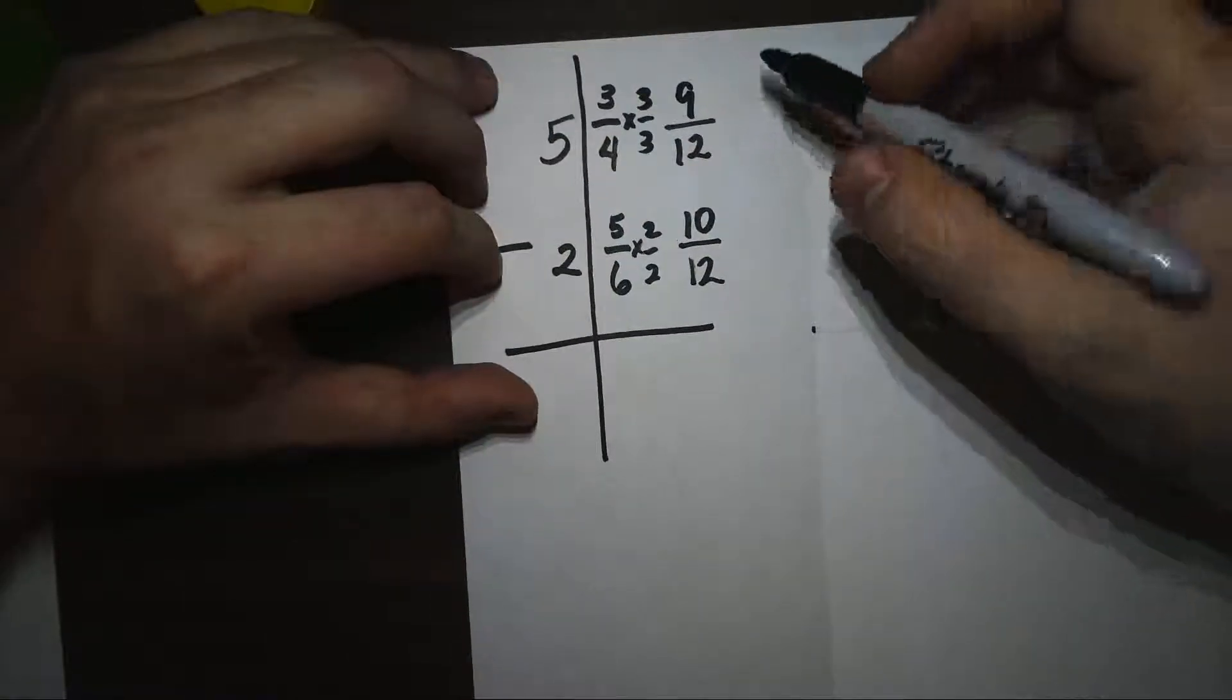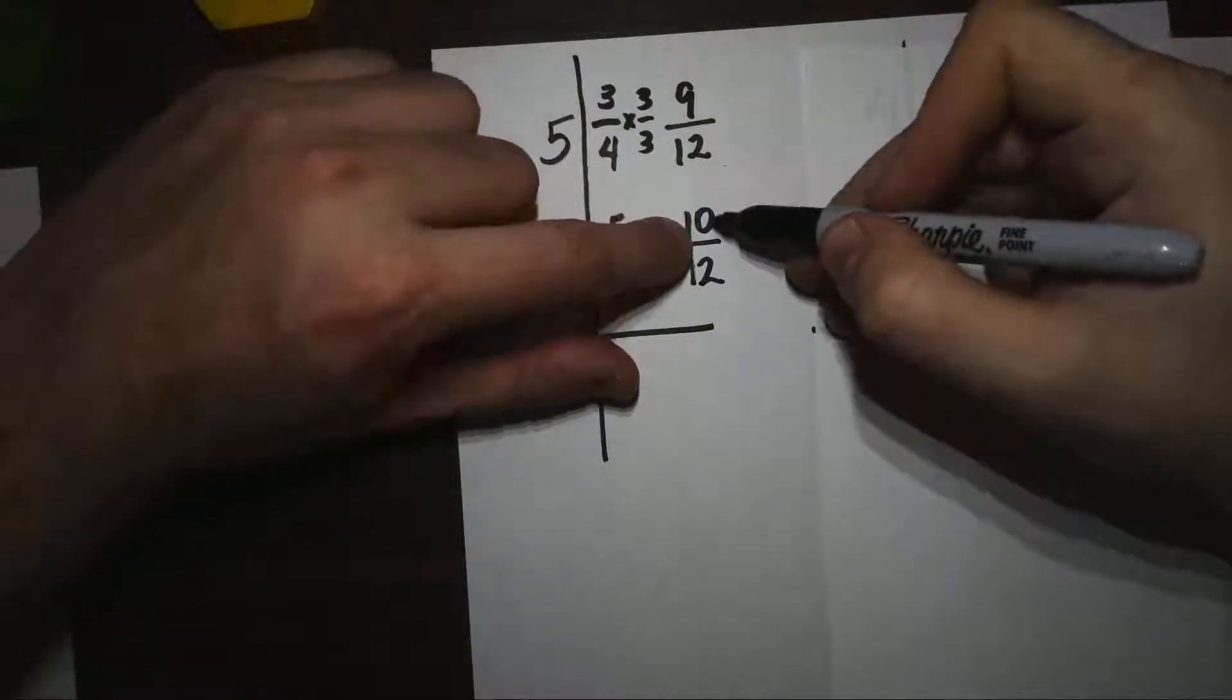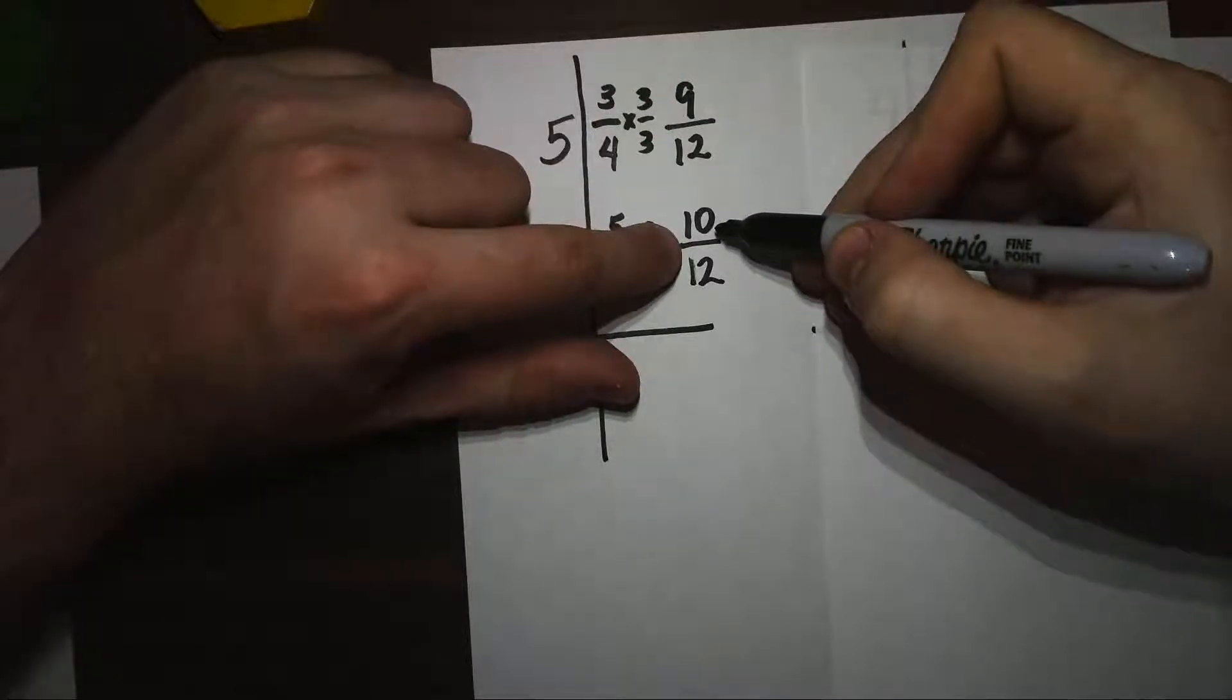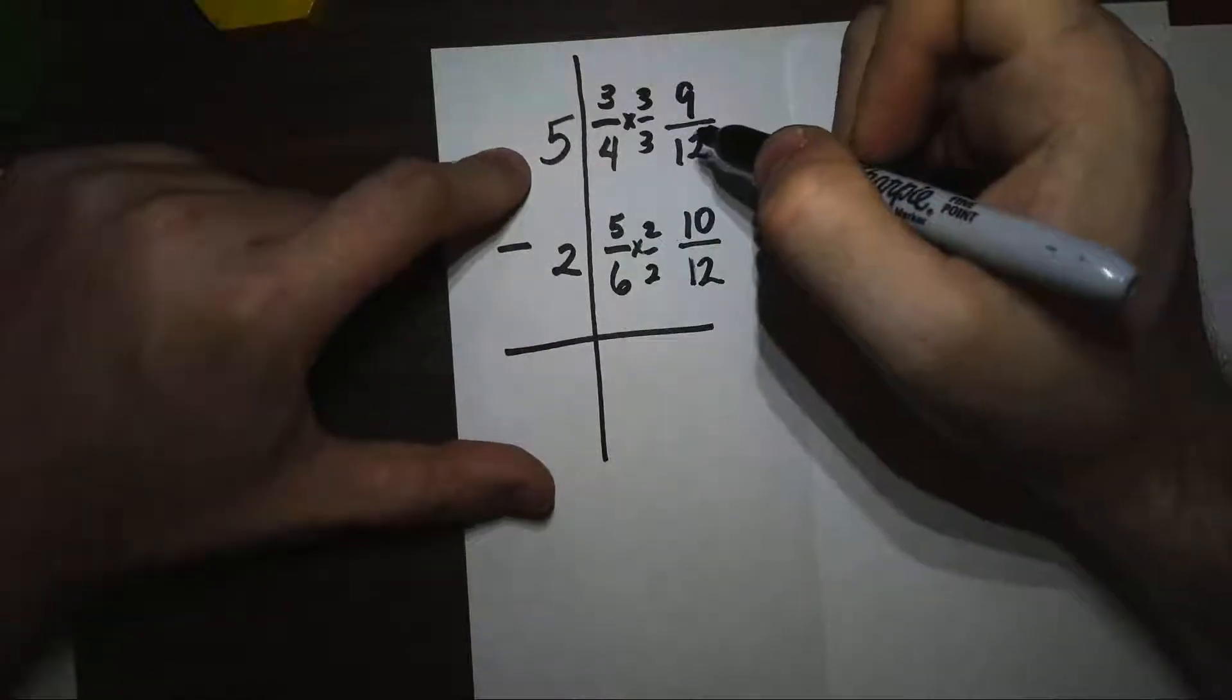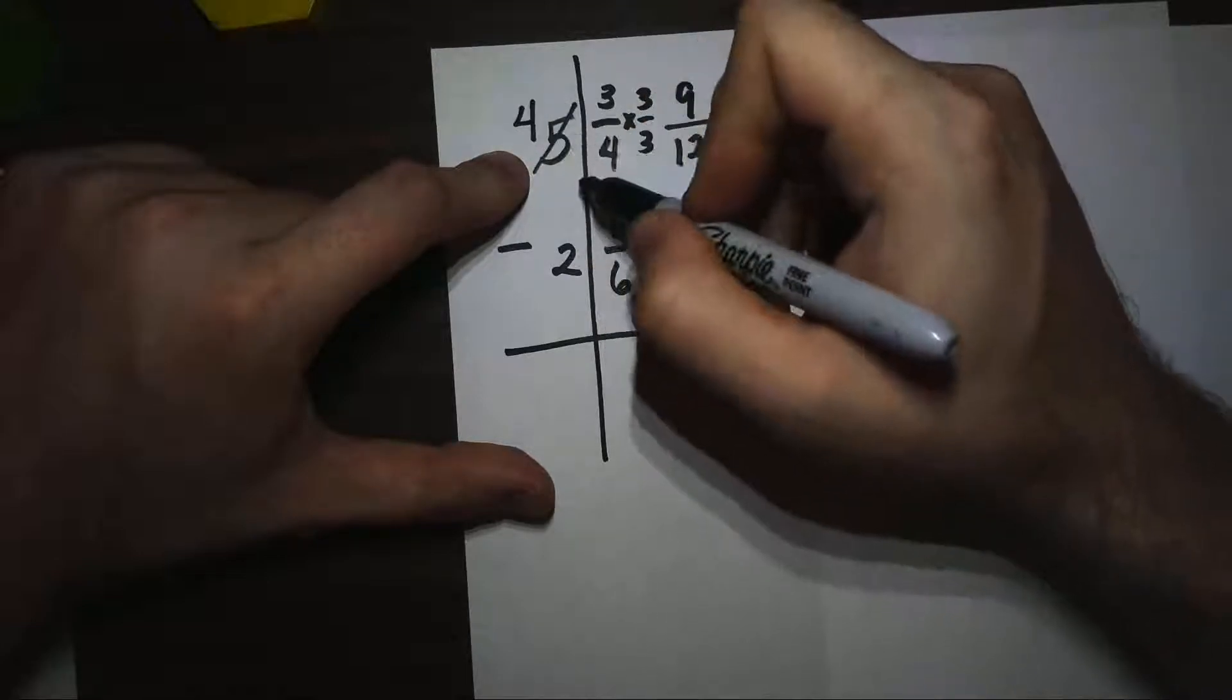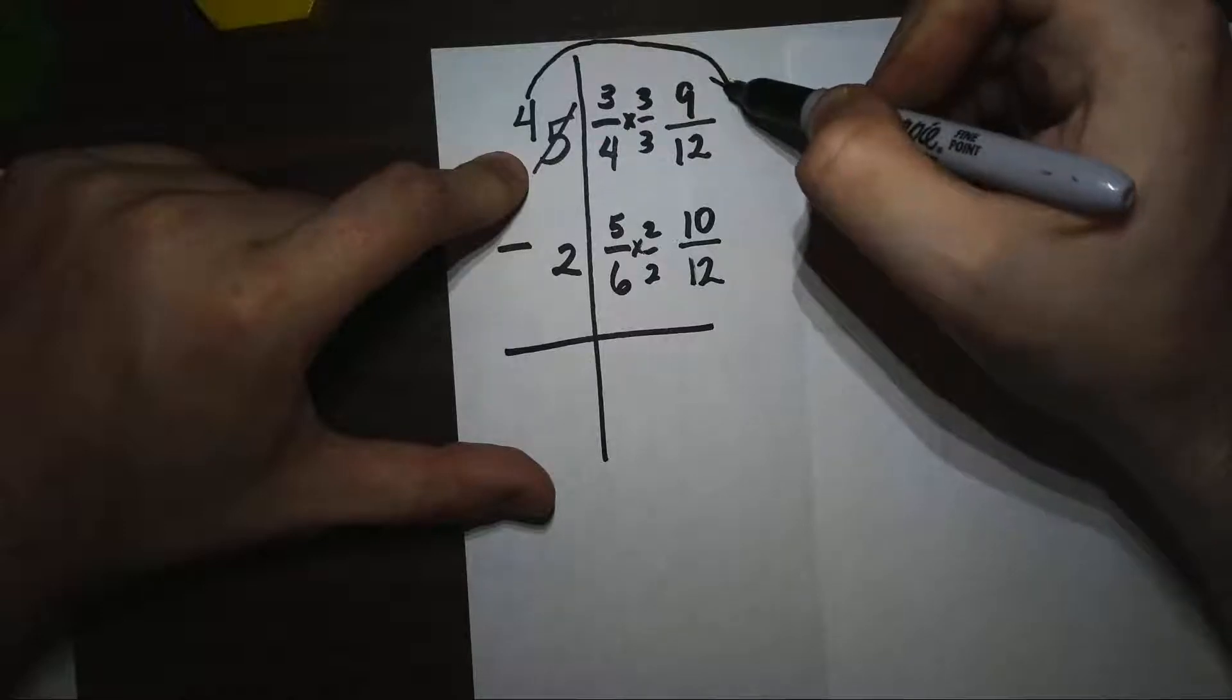Now I have a common denominator, but the problem is I'm trying to do 9/12 minus 10/12. And I can't do 9 minus 10 without getting a negative number. So what I'm going to have to do is come over here to this whole number part and regroup. I'm going to take 1 whole away from the whole number part and add that whole back right over here.